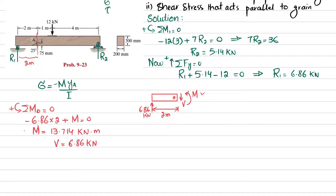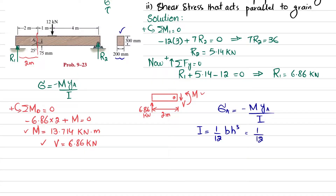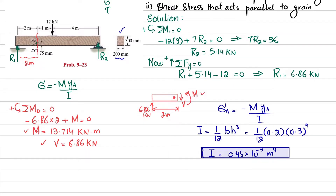Now we use σA = −M·YA / I. The cross-section is rectangular, so I = (1/12)·b·h³. With b = 200 mm = 0.2 m and h = 300 mm = 0.3 m, I = (1/12)(0.2)(0.3³) = 0.45 × 10⁻³ m⁴. This is the second moment of inertia of the rectangular beam.